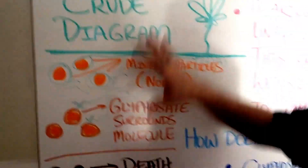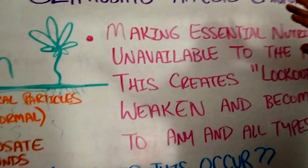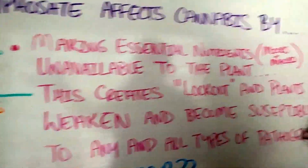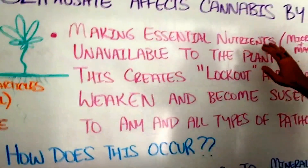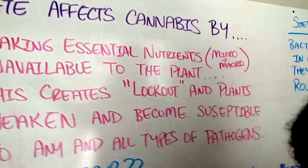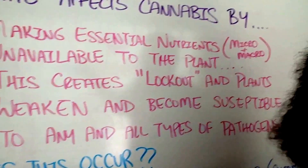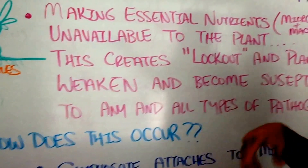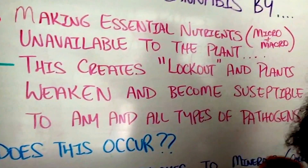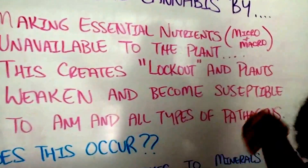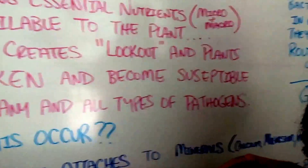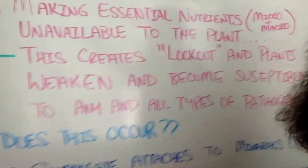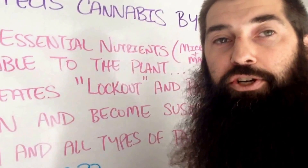Now that's the basic diagram, but let's actually explain it. How does glyphosate affect cannabis? It affects it by making essential nutrients — both micro and macro — unavailable to the plant. This creates a lockout effect, and plants weaken. Then they either die because they can't get the nutrients, or what usually happens most of the time is that those plants become susceptible to any and all types of pathogens, meaning they're overcome with disease because they're not getting nutrients. Their immune systems weaken.